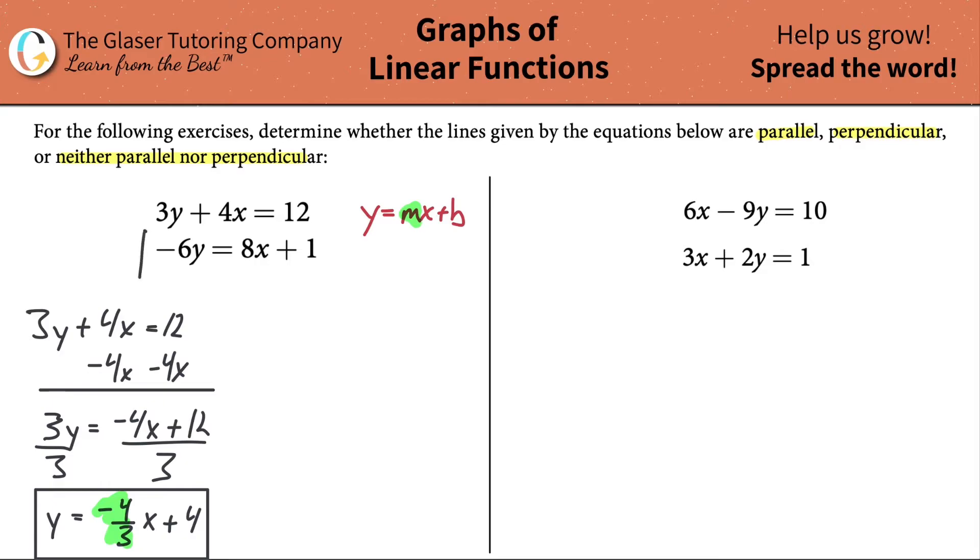Now I have to do the same thing on the second equation. I have to get that into the form y equals mx plus b and then compare the two slopes. So negative 6y equals 8x plus 1. I already realized that I got y on the left and x on the right, so it looks very close to this, except this is not solved for y, it's solved for negative 6y. So I got to get rid of the negative 6. Since it's held together to the y by multiplication, I have to divide it out.